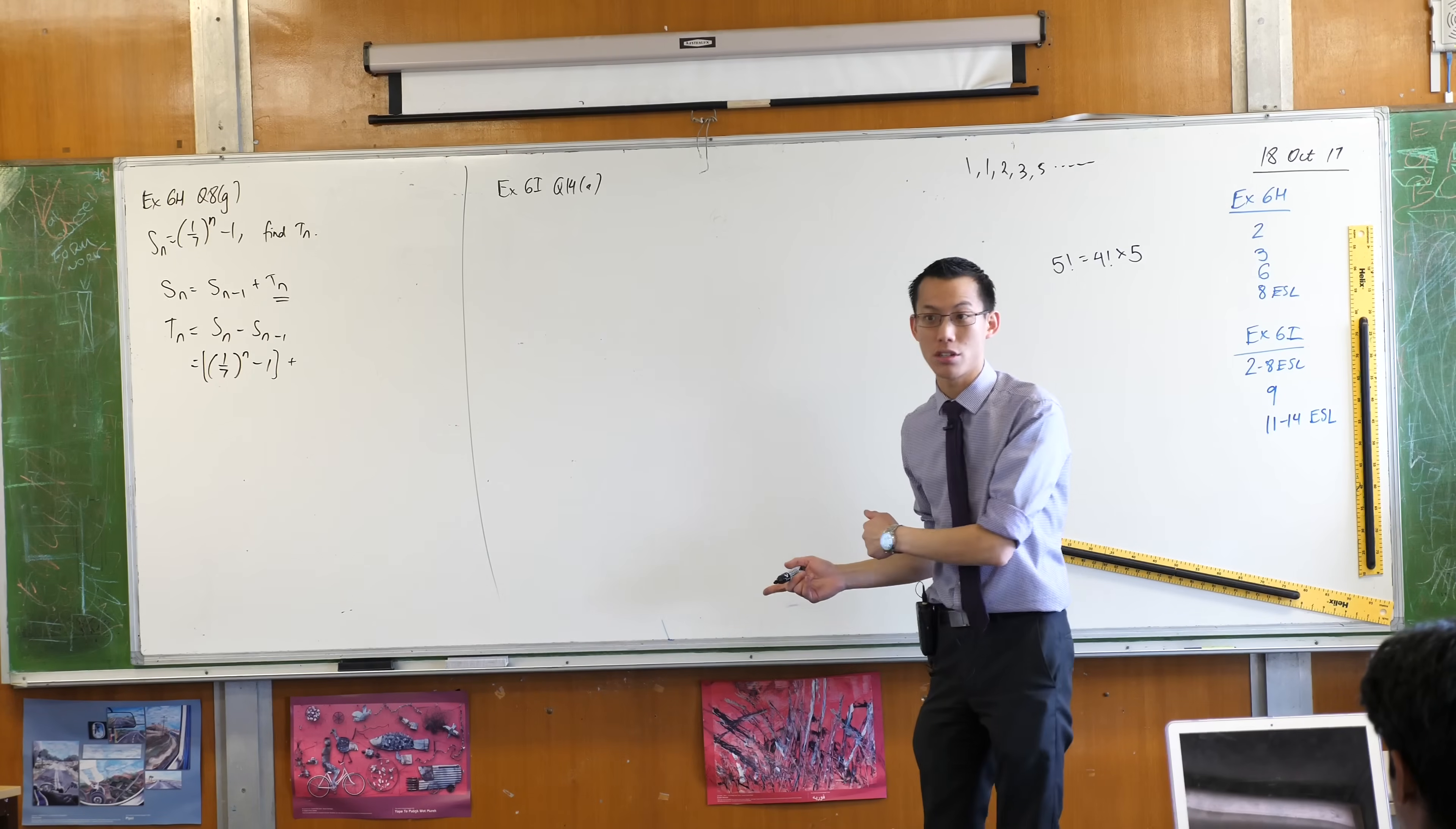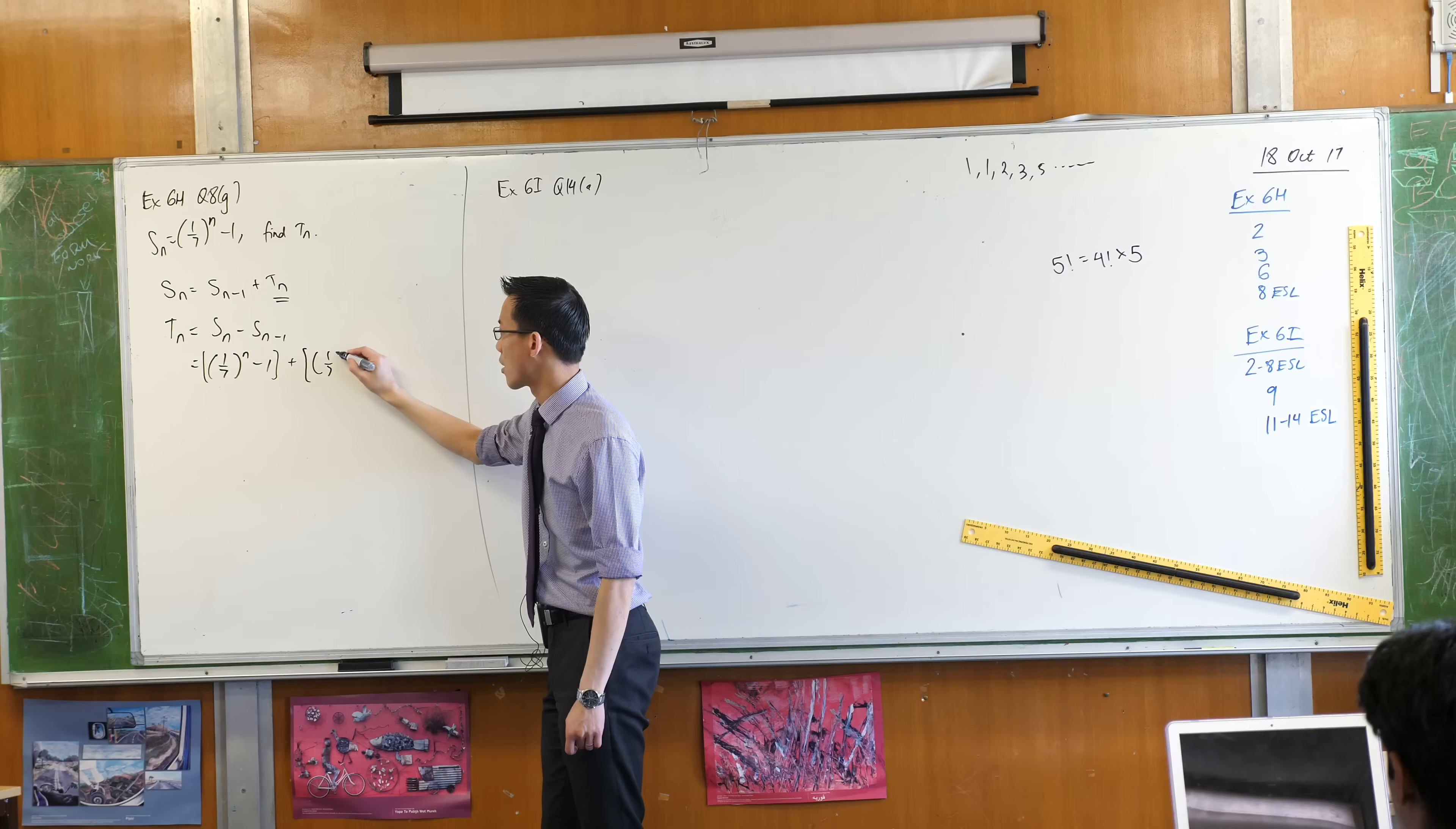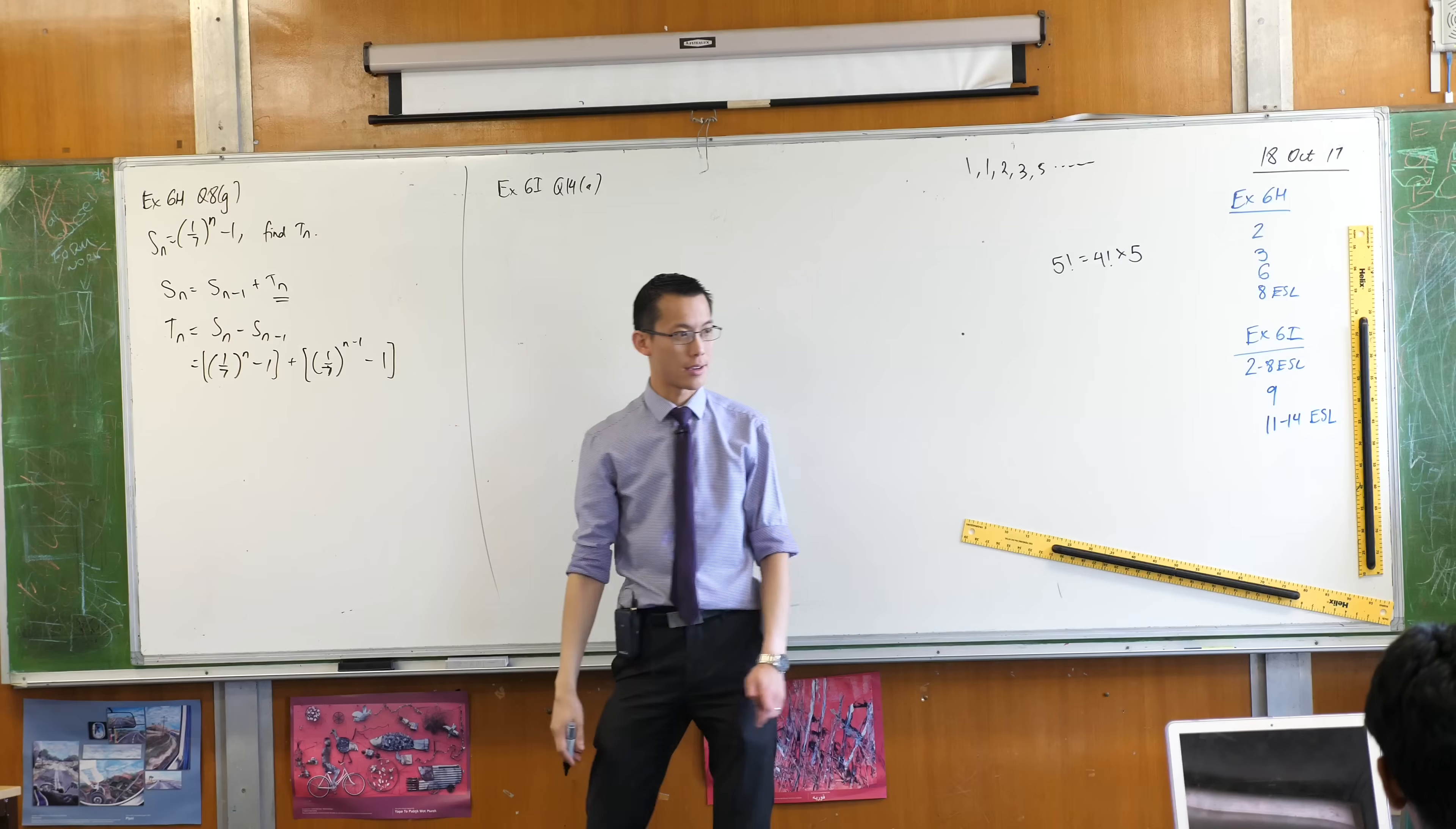So instead of writing a seventh to the power of n, I'm going to write a seventh to the power of n minus 1. That's all I have to do. And then there's the take away 1 hanging out on the end.